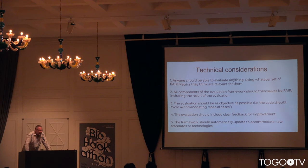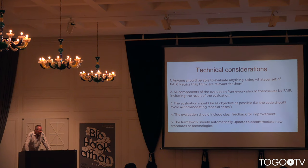It should provide clear feedback for improvement — if you fail a particular metric, the system should tell you why and what you could do to improve next time. Finally, it should automatically update itself with new standards, and I'll show you how we do that in a second.